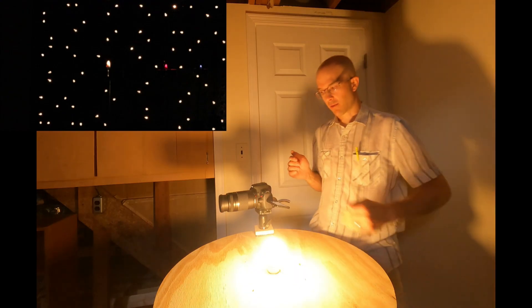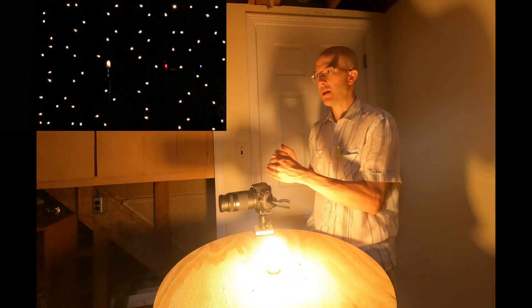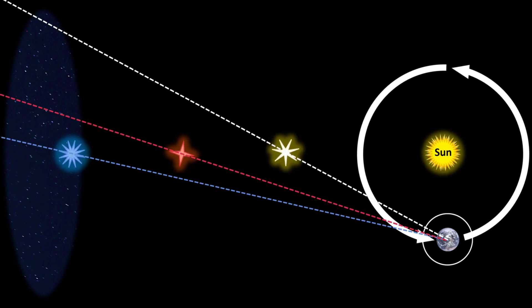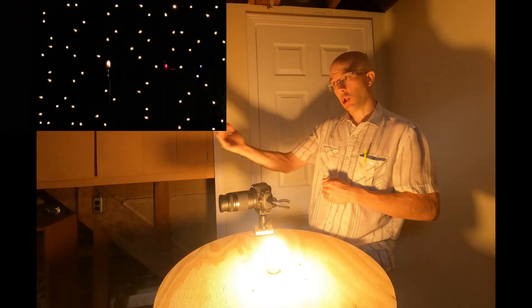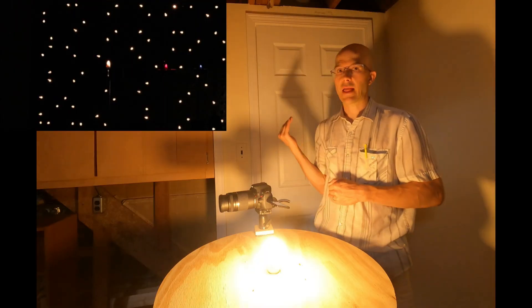This change in position from one end of our orbit to the other is what makes it appear as though our three candles are wobbling or moving against those background stars. And we notice that the closer the star, the more parallax we observe.